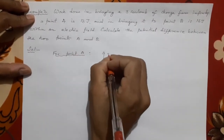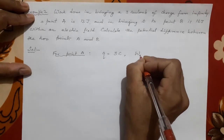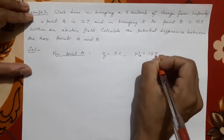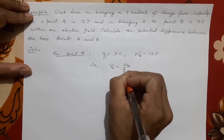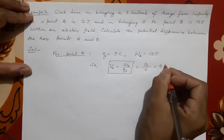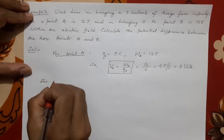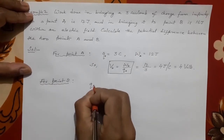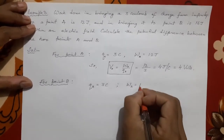For point A: charge Q = 3 coulomb, work done W_A = 12 joule. The formula is V_A = W_A / Q_A. Substituting: 12 divided by 3 = 4 joule per coulomb, which is 4 volts. For point B: charge Q_B = 3 coulomb again, work done W_B = 16 joule.